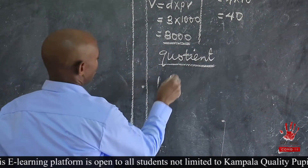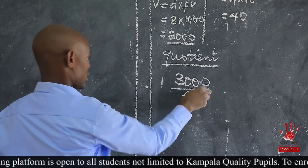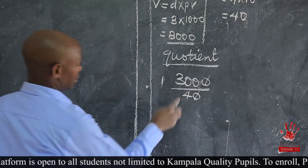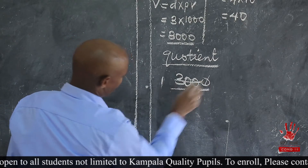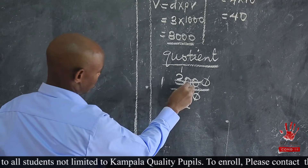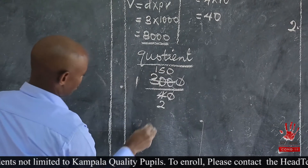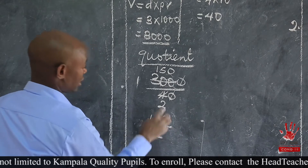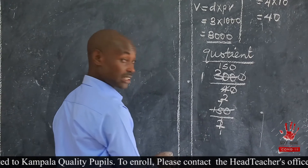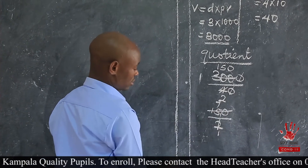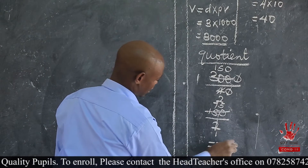So our quotient is going to be 3,000 divided by 40. We can reduce: 3,000 ÷ 40 becomes 300 ÷ 4. Divide by 2, we get 2. 3 divided by 2, we get 1 remainder 1. To make it 10. 10 divided by 2, is 5. Then 0 divided by 2, we get 0. So we have 150, which will be divided by this 2. Divide by 2: 15 divided by 2 gives 7 remainder 1. 10 divided by 2 is 5. So our quotient is 75.